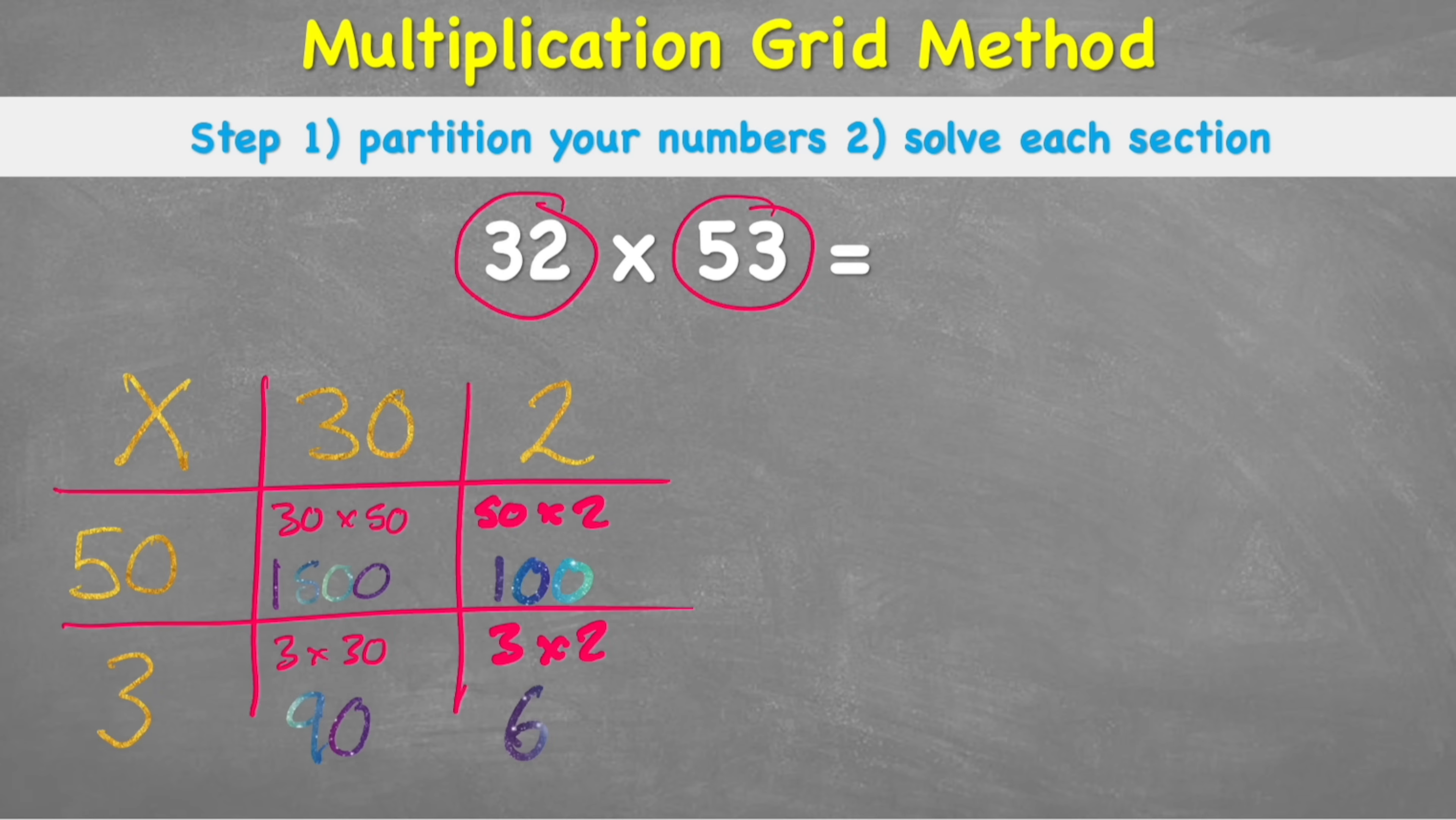Awesome. But are we finished? No, because what we've done so far is we have worked out the individual parts of this question. We've got four individual parts. We multiplied 50 times 30, 50 times 2. Then we did 3 times 30 and 3 times 2. So we've got the four individual parts, but we need to now add it back together. So my answers were 1,500, 100, 90, and 6. And you can see I'm just using column method to add this up.